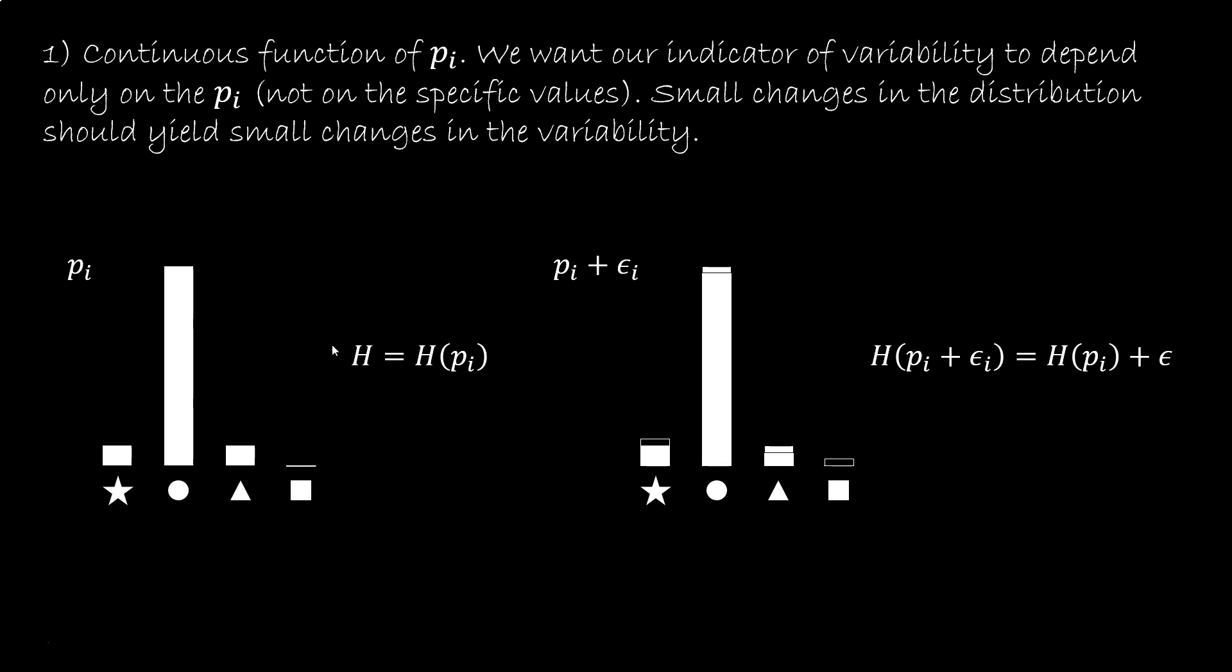And we want small changes in the distribution to give small changes in the variability. So, if h is the indicator, h is a function of PI, and if we make small changes in the PI, we should have a small change in the indicator.